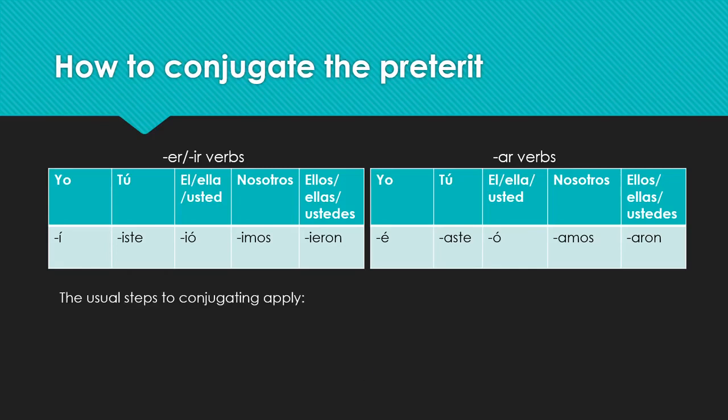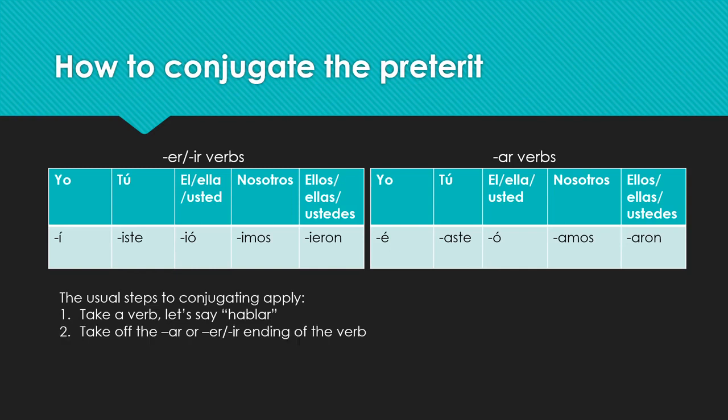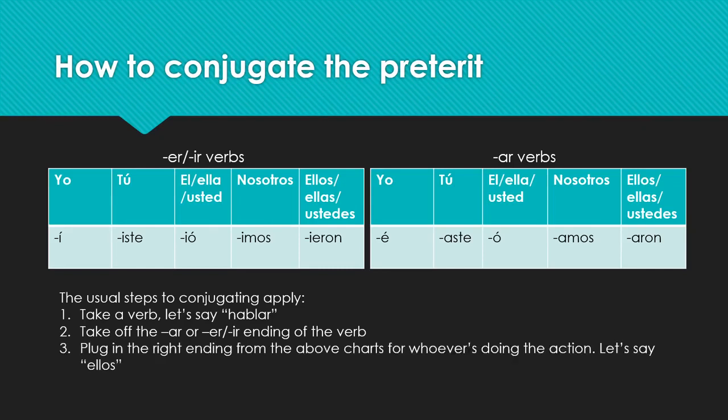Again, the usual steps for conjugating apply. Take a verb — let's say 'hablar' again. Take off the AR ending, then plug in the right ending from the chart for whoever's doing the action. Let's say 'ellos': we would end up with 'ellos hablaron.' Pretty simple — not too bad once you get used to it. Try to have these conjugation charts with you whenever you're studying.